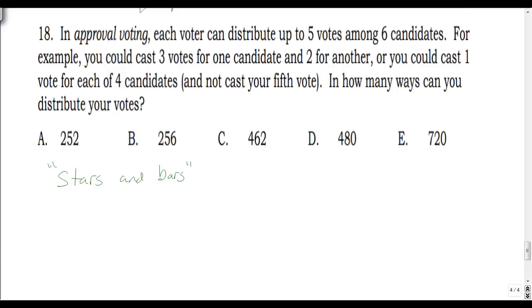The candidates are A, B, C, D, E, F — 6 candidates — plus a 'no one' option G representing not casting that vote. We need to distribute up to 5 votes across these 7 options using the stars and bars method.